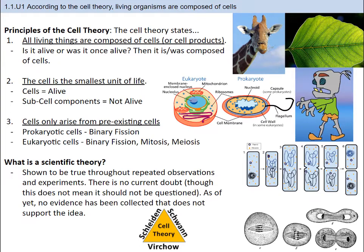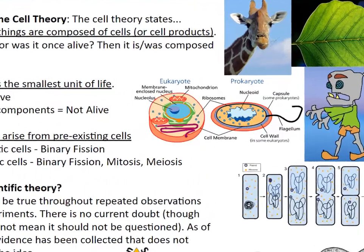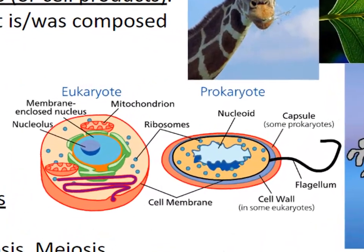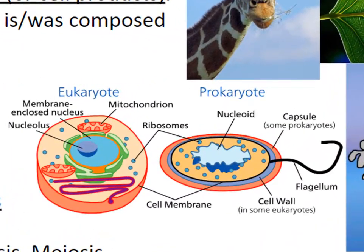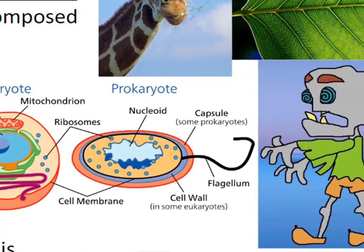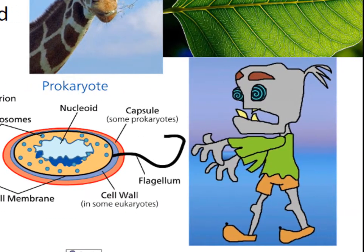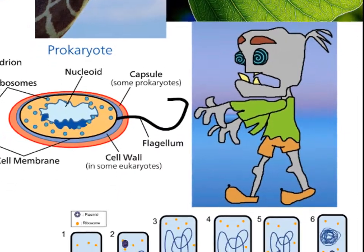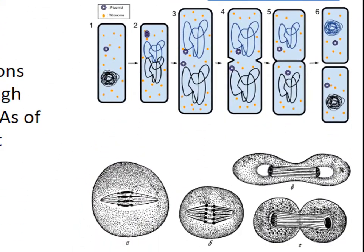In science, we need evidence to support a theory. There's so much evidence for the cell theory. While there are a few oddities, we humans have never observed the cell theory to not be true. Subcell components cannot perform the functions of life on their own. Since scientists first observed cells from the 17th century, all plants, animals, and fungi have contained one or more cells. Lastly, we have observed cells coming from other cells, but not spontaneous generation of cells.